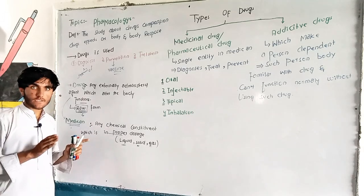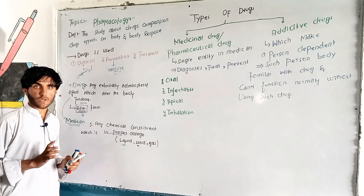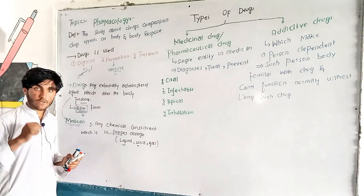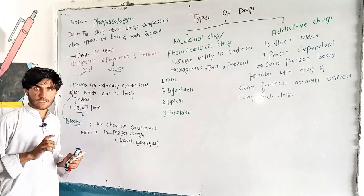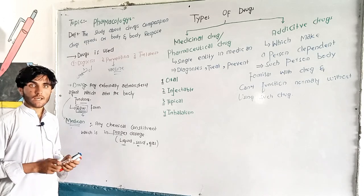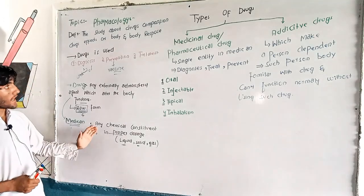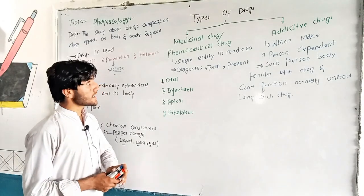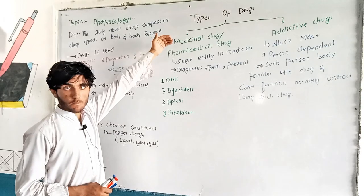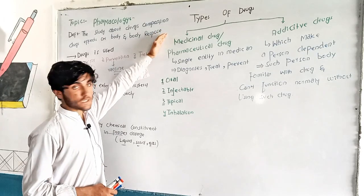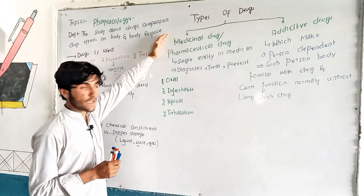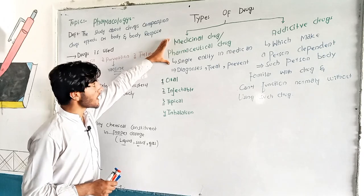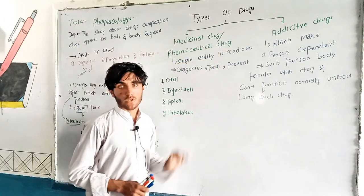For example, the Victoria virus, which is affected by an external body, can be caused by an internal agent as well. Now we have two main types of drugs: first, we have medicinal drugs, pharmaceutical drugs, and addictive drugs.